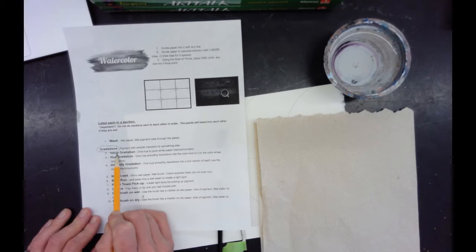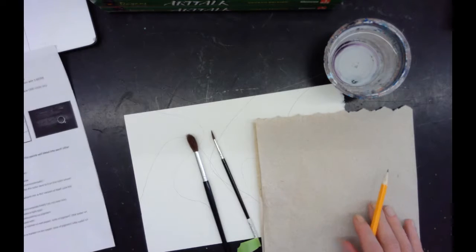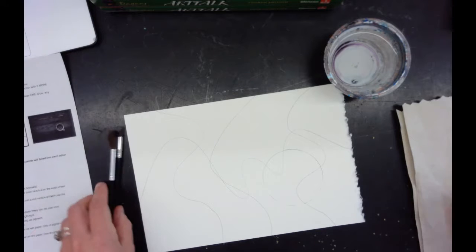So I'm going to do a value gradation, which is the simplest, a hue gradation using analogous colors, and an intensity gradation going from bright to dull. And with that one I will use complementary colors.